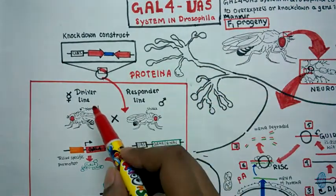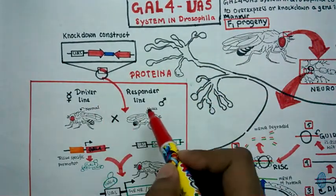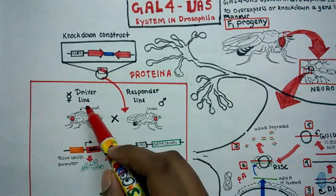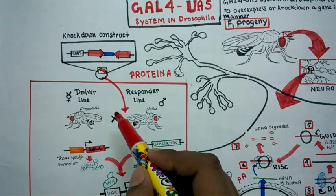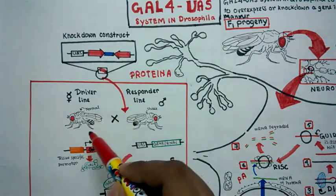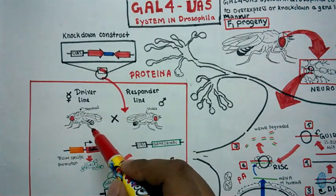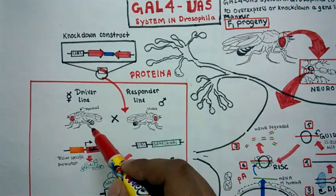We have a driver line on one hand, and on another side, we have our responder line. This driver line is actually a GAL4 line. In the driver line, GAL4 is actually placed under a tissue-specific promoter in order to get spatial control.